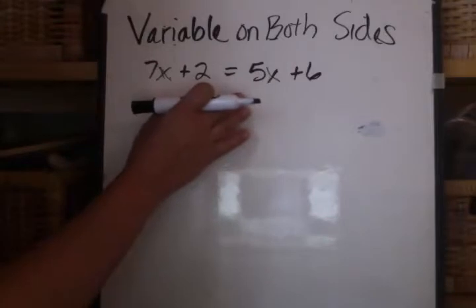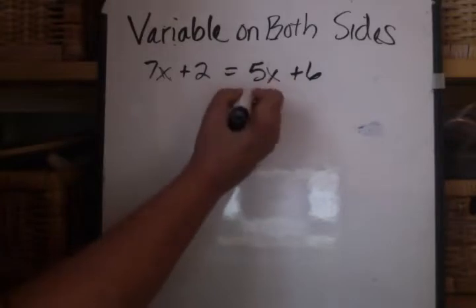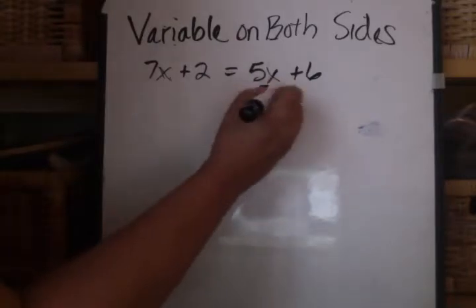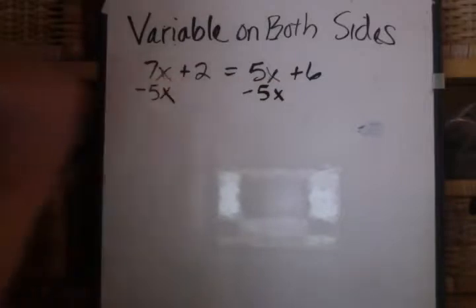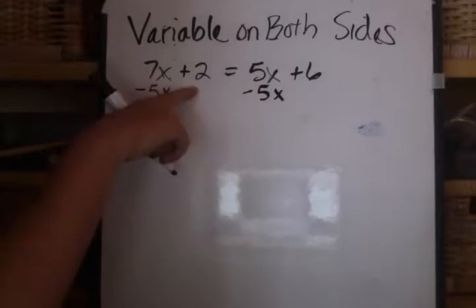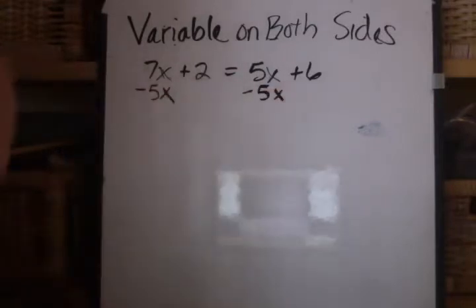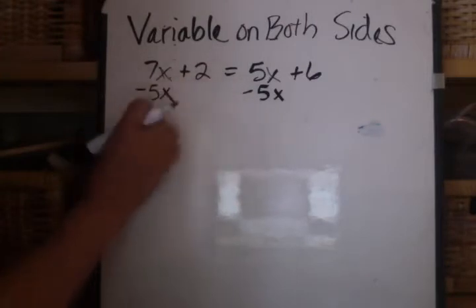And what I do, generally, is I take the smaller number, which is 5 here, and I'll subtract 5x from both sides. That's going to be your first step. Normally, we're never subtracting x like this. Usually, we're subtracting 2 or 6. But when you have variables on both sides, we have to simplify that and get it on one side.